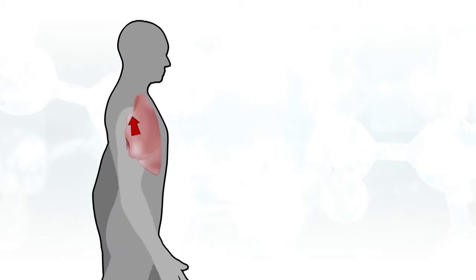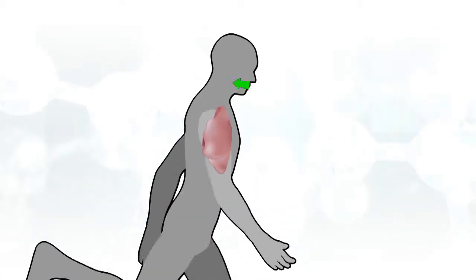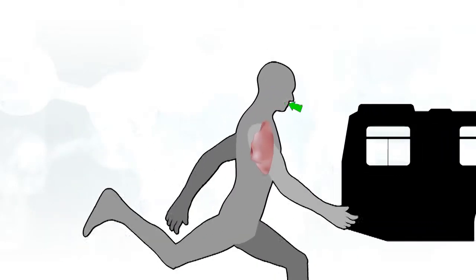We need oxygen so that our cells can function. It's a crucial molecule in producing ATP. ATP is needed for all the different types of reactions that occur in our cells.